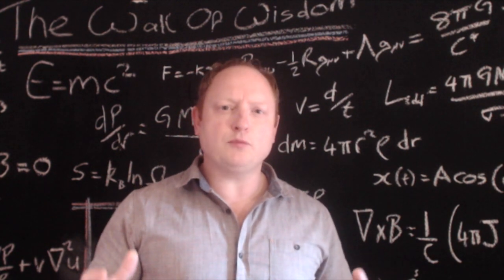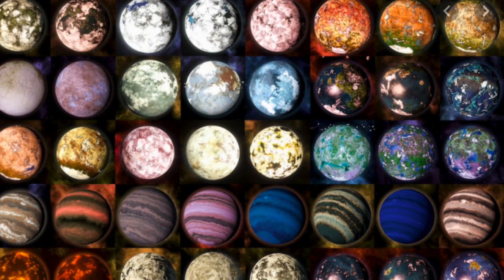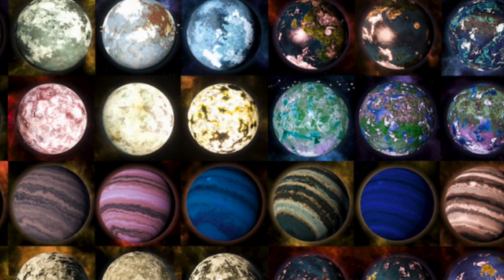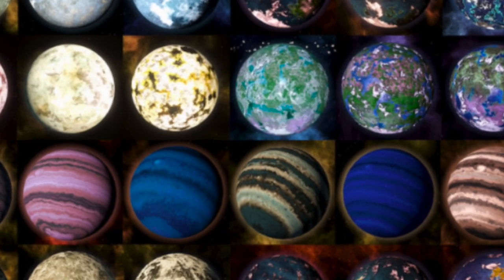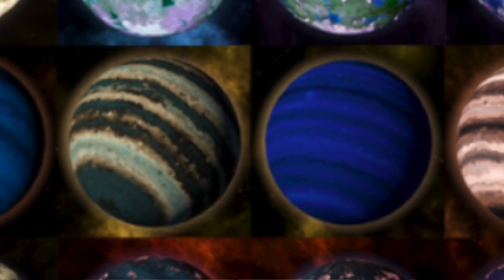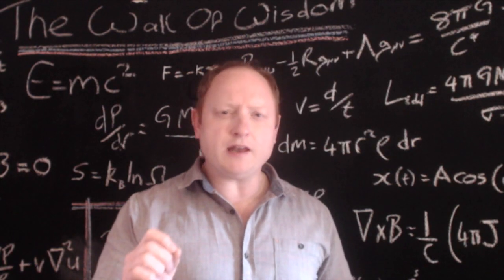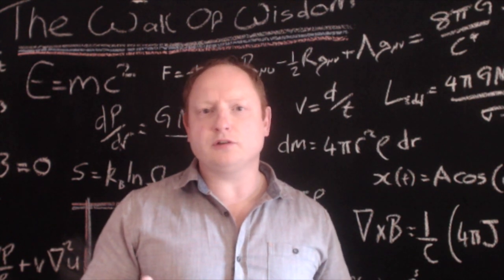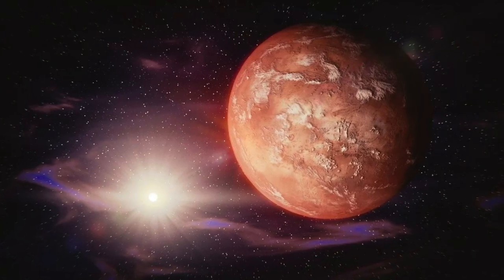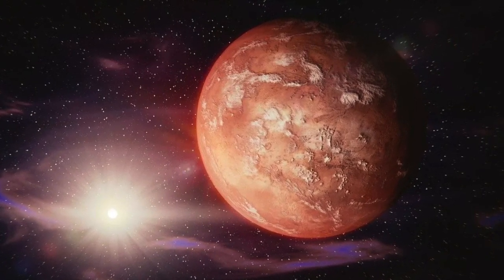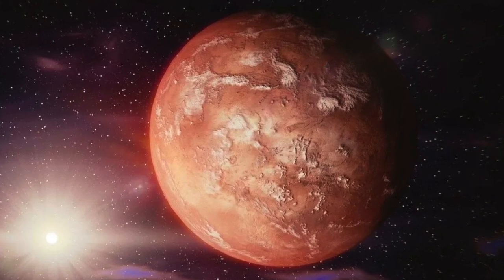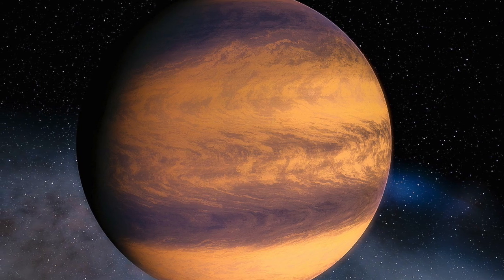When analyzing how planets are distributed in distance from their host stars, combined with the sizes and masses of those planets, astronomers realized that one area of the parameter space was devoid of planets. The region in question is located very close to the star for planetary orbital periods of less than only 3 or 4 days.